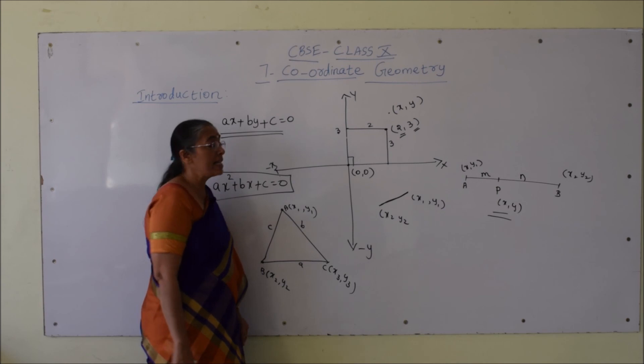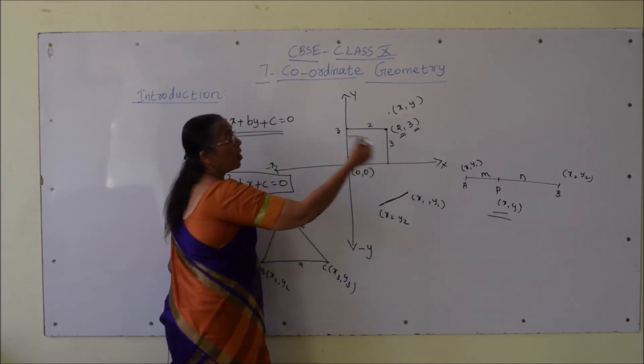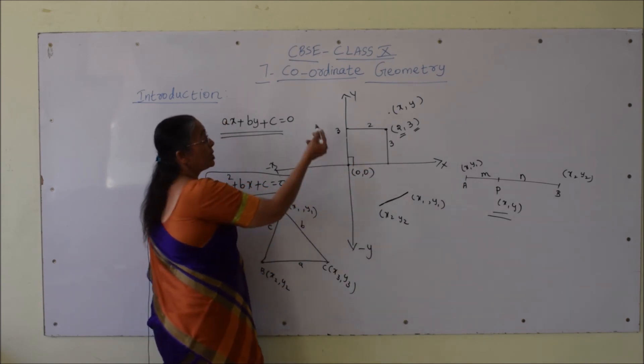The ratio in which a line segment is divided can be found using coordinate geometry.